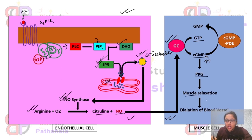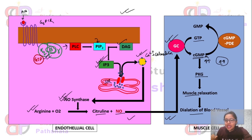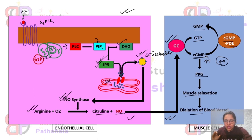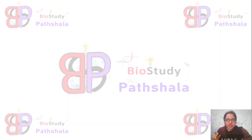Protein kinase G phosphorylates its targeted molecules or targeted proteins, which leads to muscle relaxation. This muscle relaxation further causes dilation of the blood vessel. If the concentration of cyclic GMP becomes very high within the cell, it can be converted back to GMP — guanosine monophosphate — by the enzyme cGMP-dependent phosphodiesterase (PDE). This is how the nitric oxide signaling pathway works.